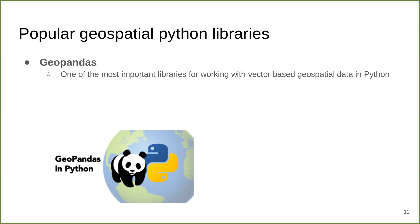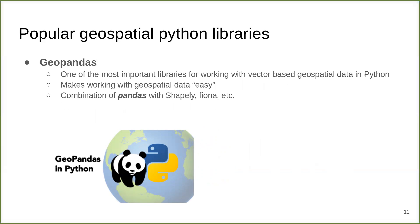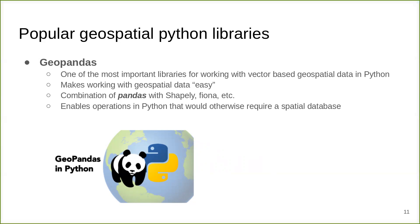GeoPandas is one of the most important libraries for working with vector-based geospatial data in Python. It makes working with geospatial data easy, meaning more standardization and more Pythonic behavior. GeoPandas is the combination of Pandas, the standard data science library in Python, with Shapely, Fiona, and other geospatial Python packages. GeoPandas enables operations in Python that would otherwise require a spatial database.